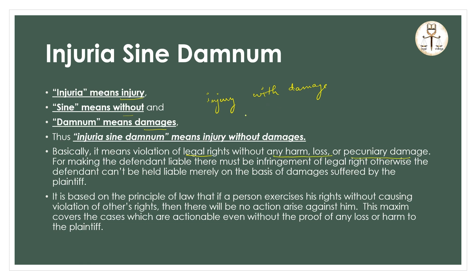Injuria sine damno means violation of legal rights without any actual harm, loss, or pecuniary damage. In such a case, there is no physical loss and no monetary loss, but still the person's right is being infringed. That is why an action would lie against the defendant. The maxim covers cases which are actionable even without proof of any loss or harm to the plaintiff.